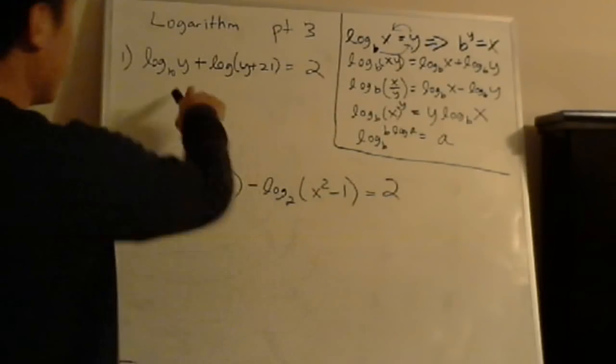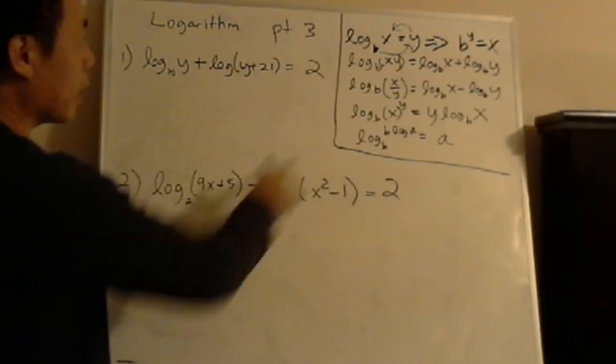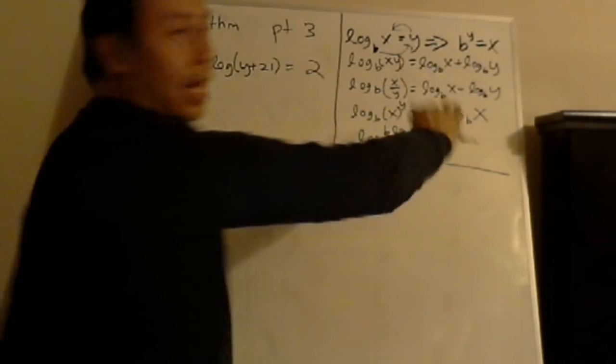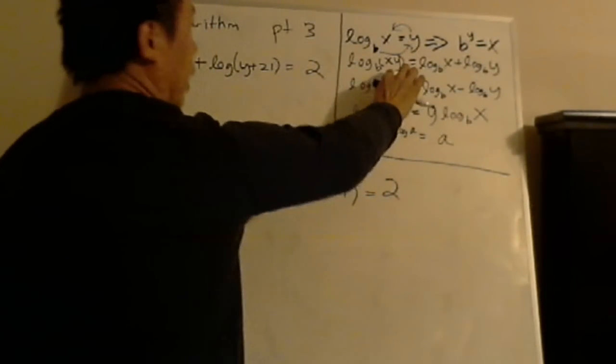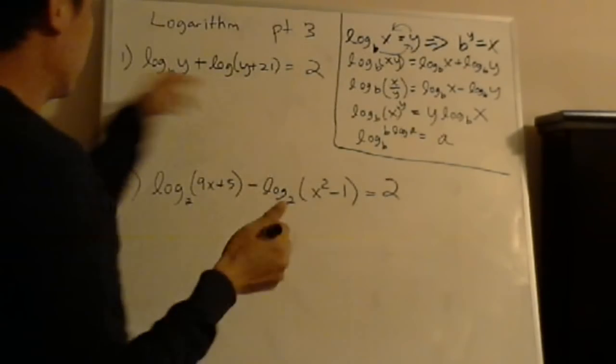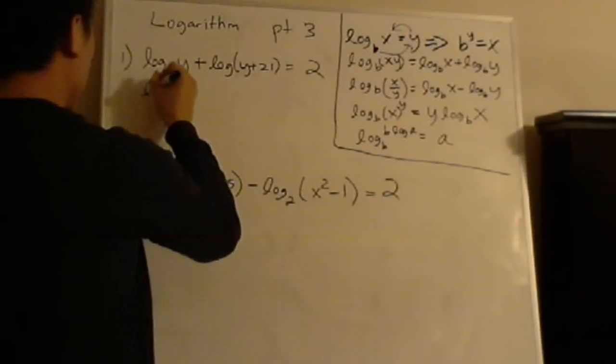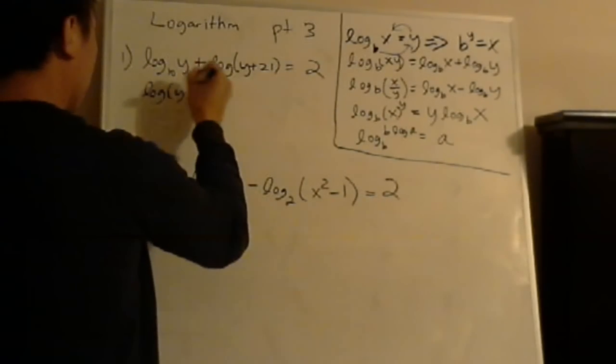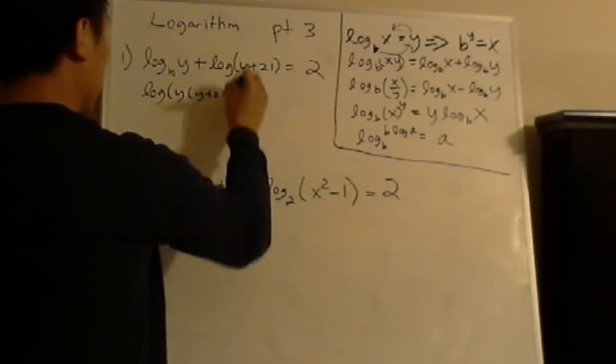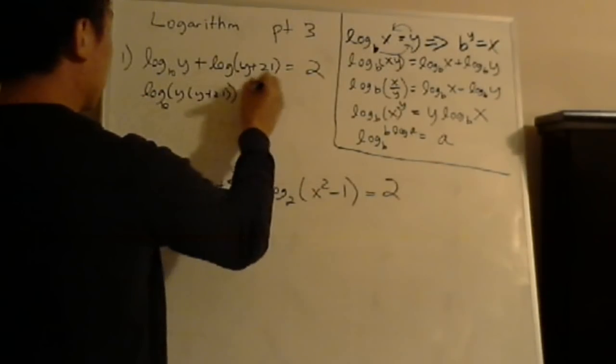Log base 10 y plus log of y plus 21 equals 2. And as you see, when you see a plus, you go to the chart, the theorem. What does it say? When you have two logs adding together, you're multiplying the things inside the logs. So that's what you're doing. You're multiplying y times y plus 21, base 10 equals 2.